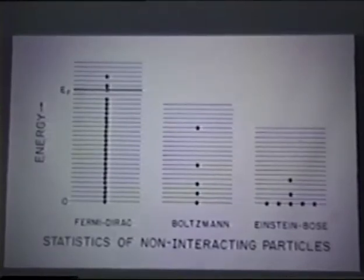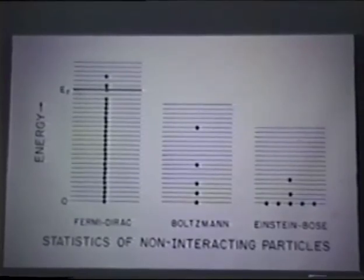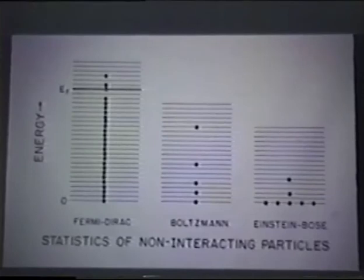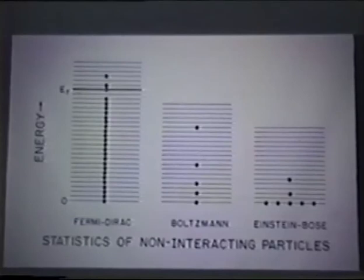This shows the effect of statistics on the occupation. For electrons which obey Fermi-Dirac statistics and the exclusion principle, you can only put one electron of one spin orientation in a given state. So in a typical metal, you have to fill up a very large number of states up to what's called the Fermi level. And then at high enough temperature, you can excite states from the uppermost levels into higher states. That shows what happens in a typical metal.